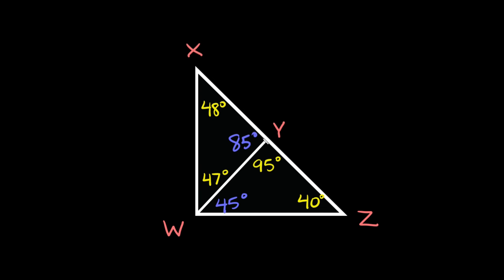Starting with triangle X, W, Y, the shortest side comes from the smallest angle. So that would be this 47 degrees right here. This 47 degrees opens up to this side from X to Y. And then on this triangle W, Y, Z, the smallest angle is this 40 degrees. So this 40 degree angle opens up to the opposite side from W to Y.